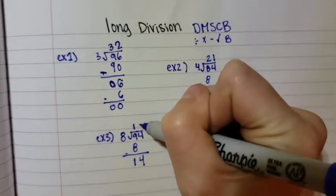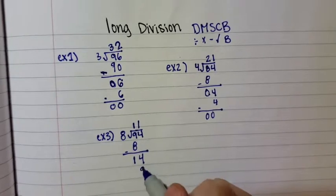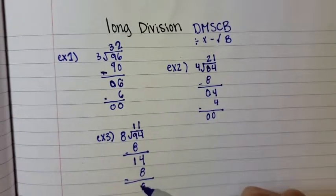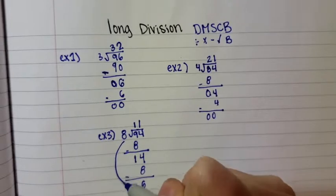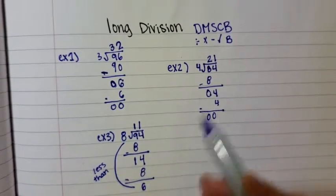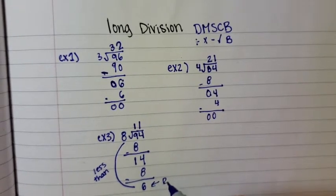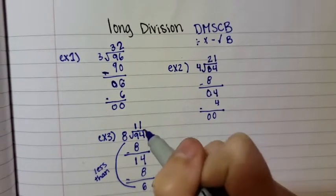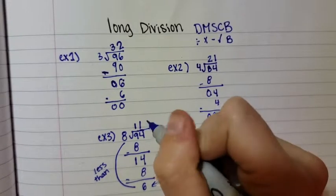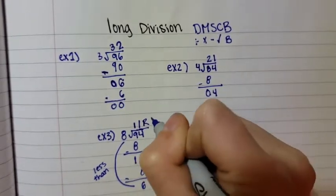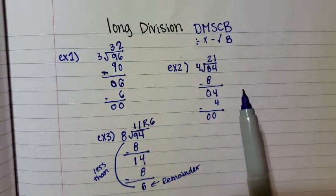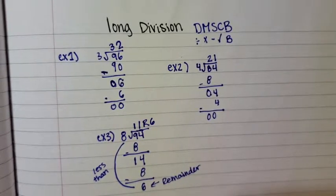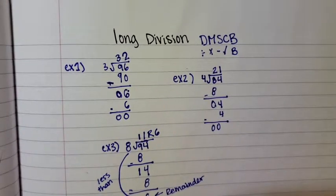Now you're going to ask yourselves how many times does 8 go into 14? Well, it only goes in there 1 time. 8 times 1 is 8, subtract, and you get 6. Since 6 is less than 8, that means your 6 right here is your remainder. You're just going to place this on top with your 11 and just put a capital R and the number that was left over. So 94 divided by 8 is 11 with a remainder of 6. That just means it doesn't go in there evenly.